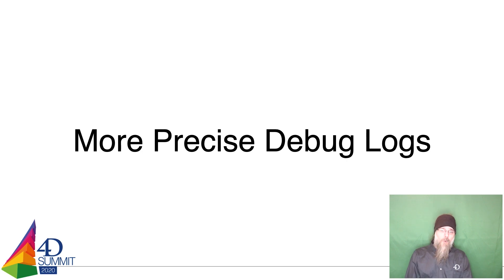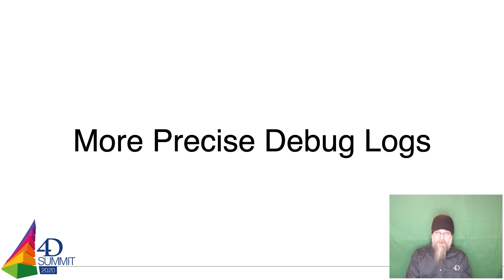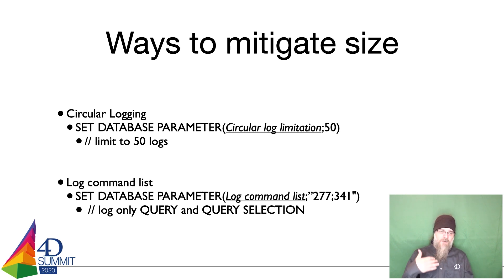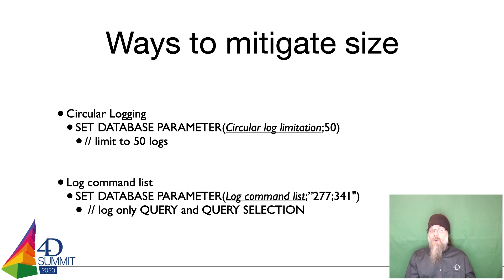Next feature: more precise debug logs. As a 4D developer, you may have already activated the debug log to troubleshoot problems. One thing you may have noticed, depending on how busy your application is, is that debug logs can contain a lot of information — because logs contain every line of code executed for every single process within the application. Some existing ways to mitigate large log sizes include circular logging: in this example we limit logs to 50, so after 50 debug logs are created, the 51st deletes the oldest. You should never have more than 50 logs at one time.